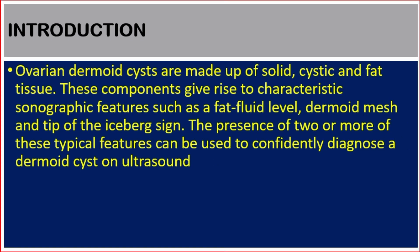Ovarian dermoid cysts are made up of solid, cystic, and fat tissue. These components give rise to characteristic sonographic features such as a fat fluid level, dermoid mesh, and tip of the iceberg sign. The presence of two or more of these typical features can be used to confidently diagnose a dermoid cyst on ultrasound.